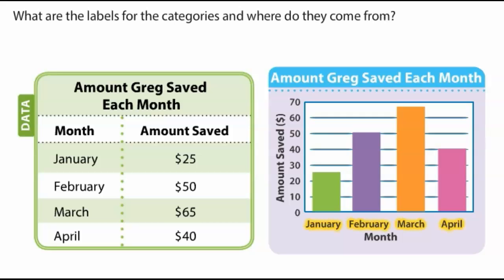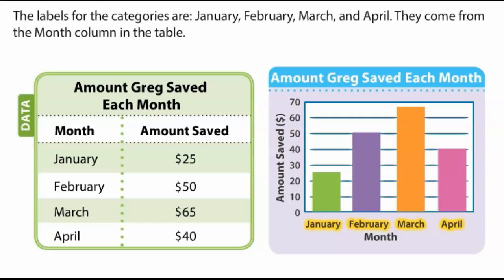What are the labels for the categories, and where do they come from? The labels for the categories are January, February, March, and April. They come from the month column in the table.